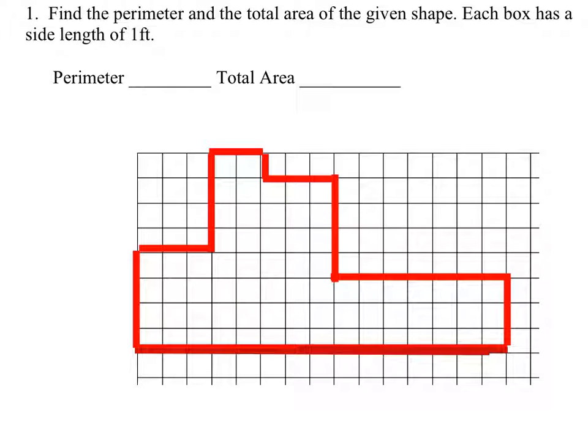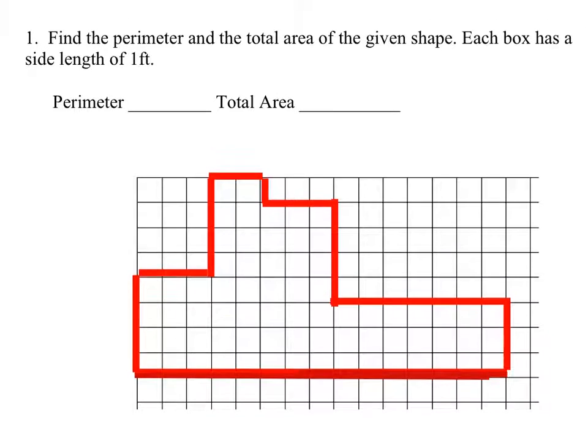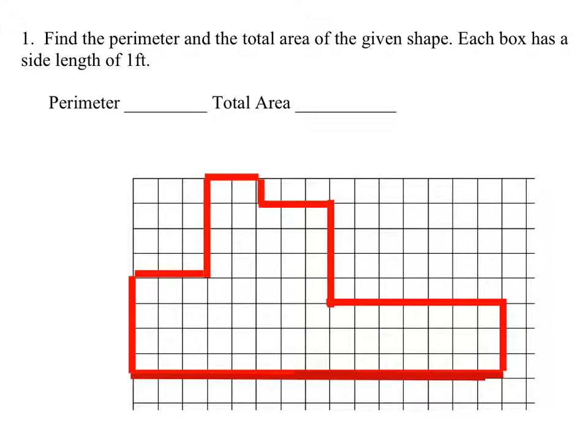On this one, we've got to find the perimeter. Can you guys see the top there? There's the question. Find the perimeter and the total area of the given shape. Each box has a side length of one foot.